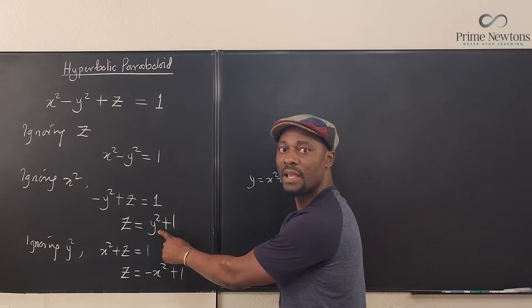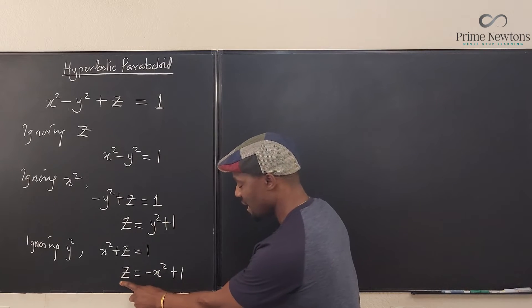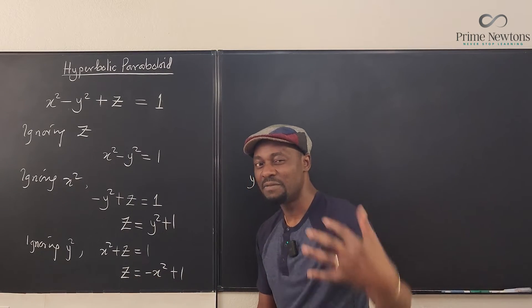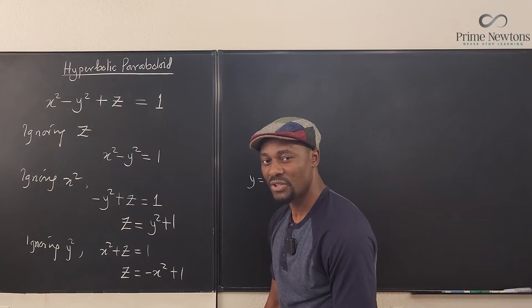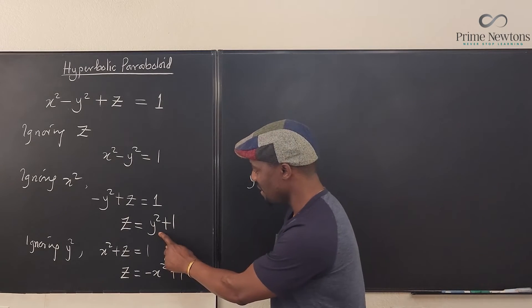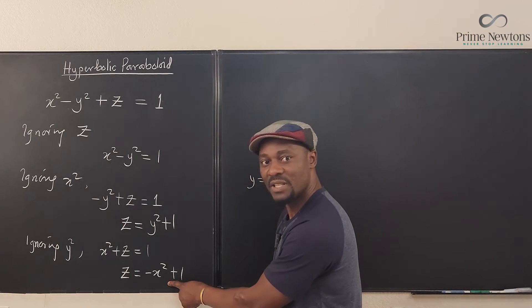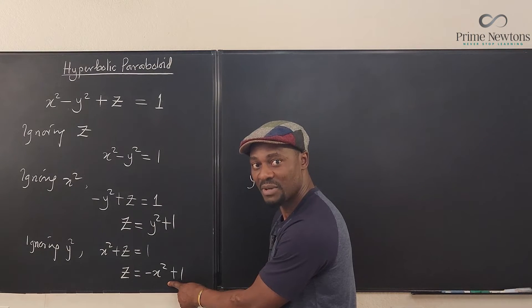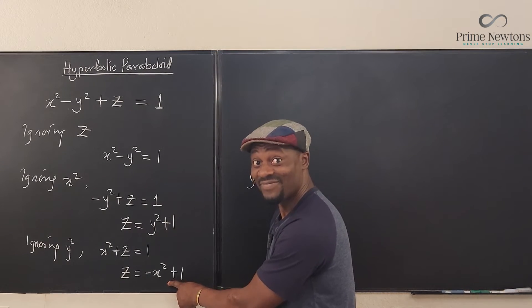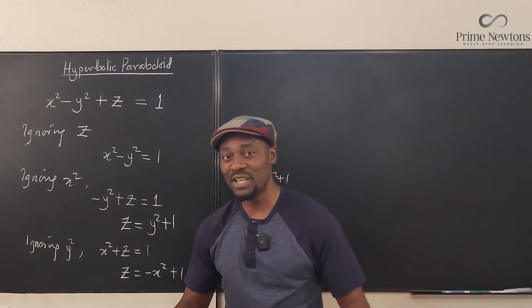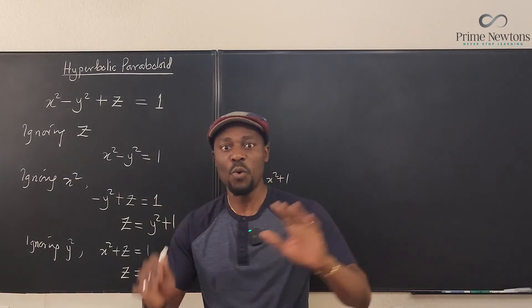And then when you go here, it's going to be a parabola that is facing the downward direction along z. This one is facing up because it's a minimum curve and this one is facing down because it's a maximum curve. So all of these things are going to come together in deciding the shape.